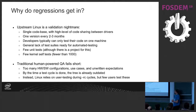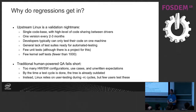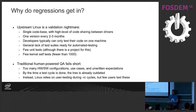Traditional QA cannot really work because there are too many hardware and software configurations. Even when you write code for Linux, you don't know how it's going to be used by other people — that's the beauty of Linux, but it also makes it difficult to explain to marketing why they should invest in upstream. With a two-to-three month release cadence, many validation cycles take weeks or even months, so by the time you've validated something it's already out of date.